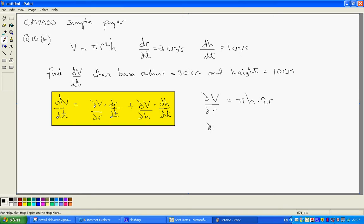And we also need partial V by H. Well, we've just got a constant, pi R squared times H. The derivative of that with respect to H, which is just a constant, will be pi R squared.